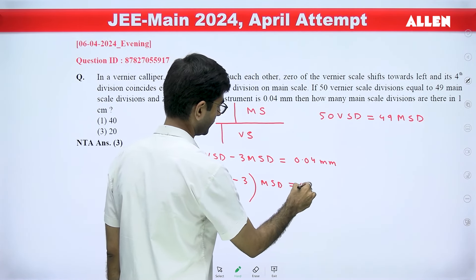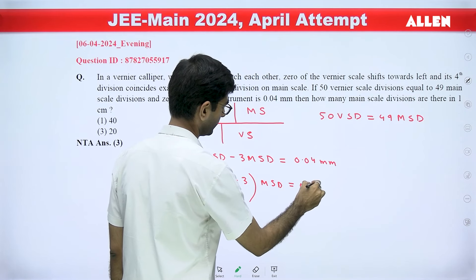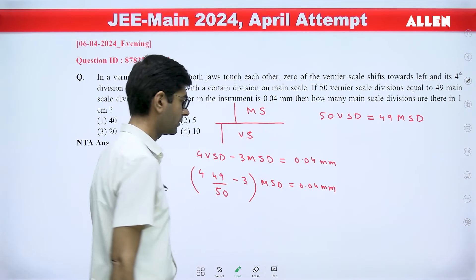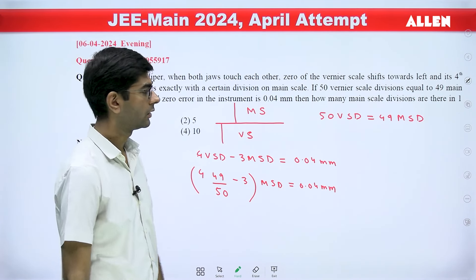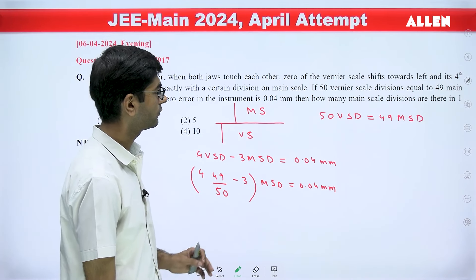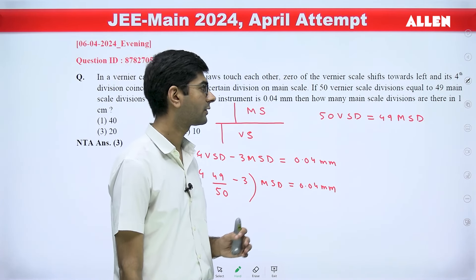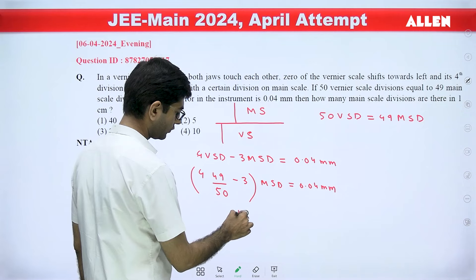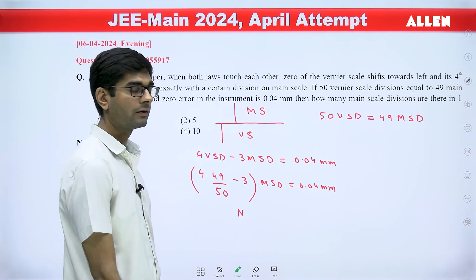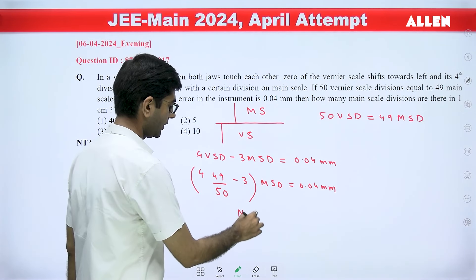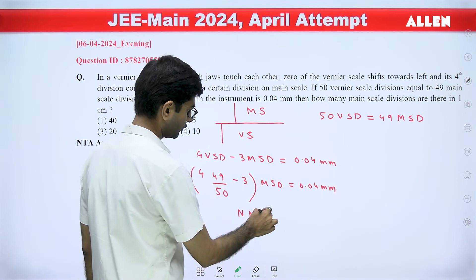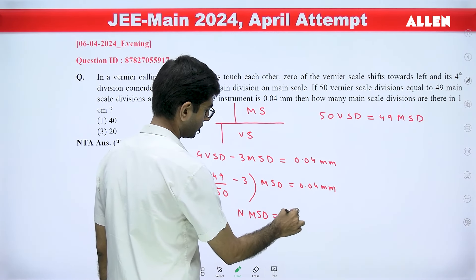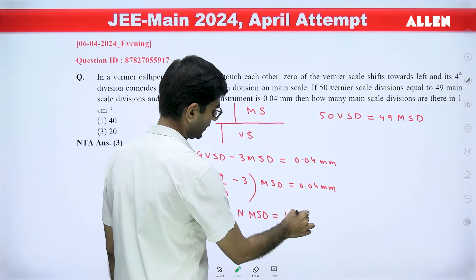Using this expression we can find MSD. Now if MSD is known to us, the question was how many main scale divisions are there in 1 centimeter. If we assume there are n main scale divisions, we can say n MSD should be equal to 1 centimeter or 10 mm.